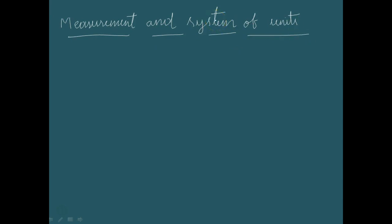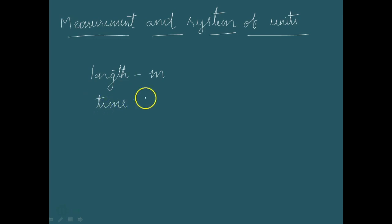In the second chapter, we are mainly studying about the measurement of different physical quantities. Whenever we measure any physical quantity, we should express it in terms of some units. For example, for length we use meter, and for time we use second. These are the units we use in order to express the physical quantities called length and time.